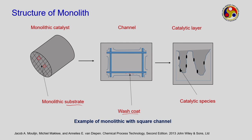The wash coat consists of the active ingredient dispersed onto it. There are some intermediate steps and finally the catalytic layer gets deposited. These are the channels and the catalyst layers are deposited, with the catalytic species also dispersed. We are looking at a small cross-sectional dimension of that particular substrate going through the entire channel. This is an example with a square channel - this is the way a monolithic reactor with a square channel is prepared.